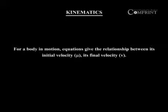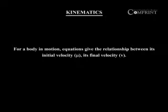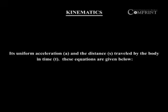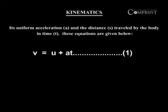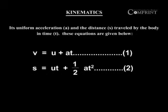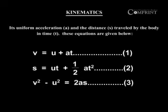Kinematics for a body in motion: equations give the relationship between its initial velocity u, its final velocity v, its uniform acceleration a, and the distance s traveled by the body in time t. These equations are given below: v is equal to u plus at; s is equal to ut plus half at squared; v squared minus u squared is equal to 2as.